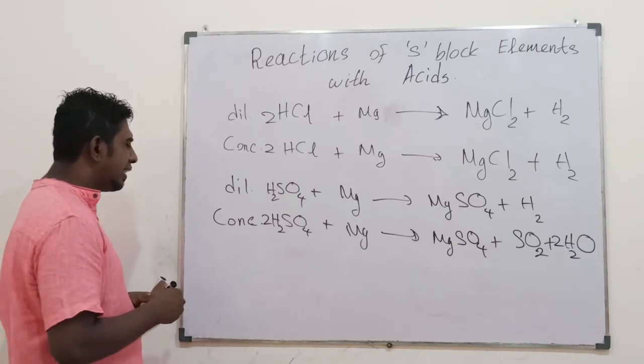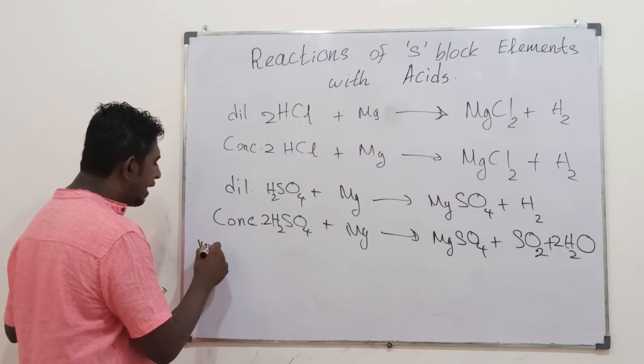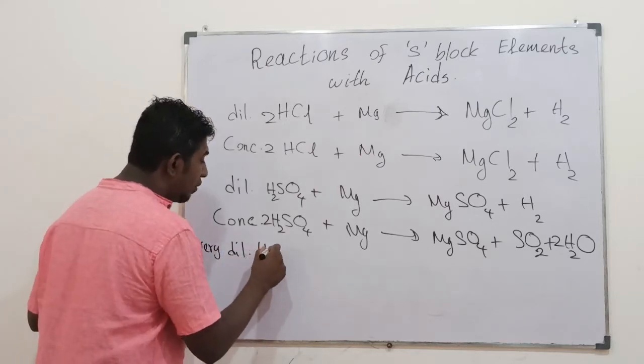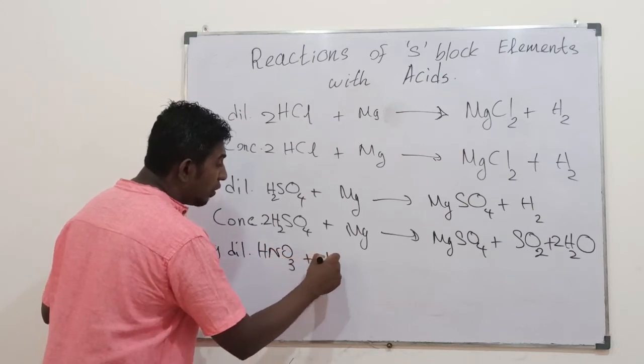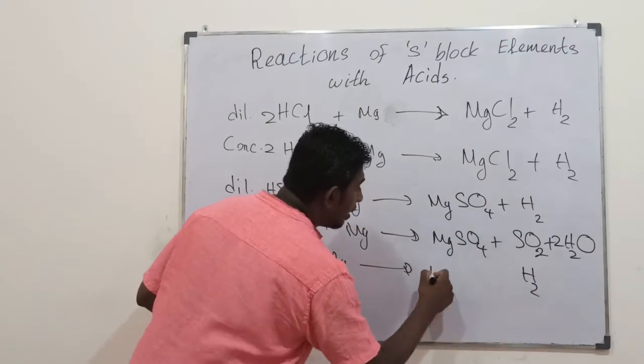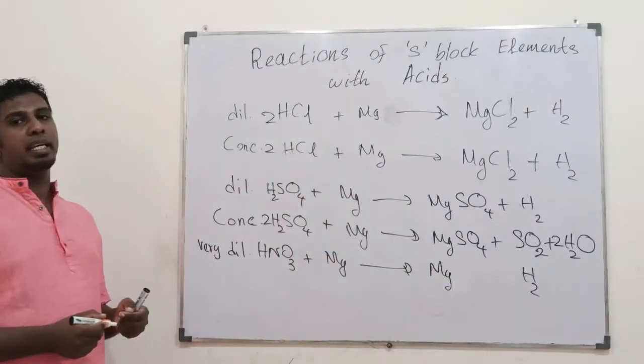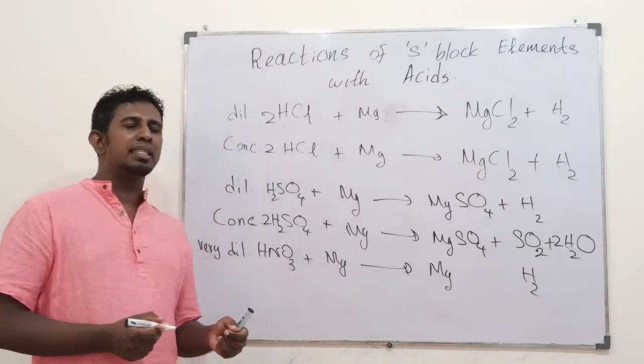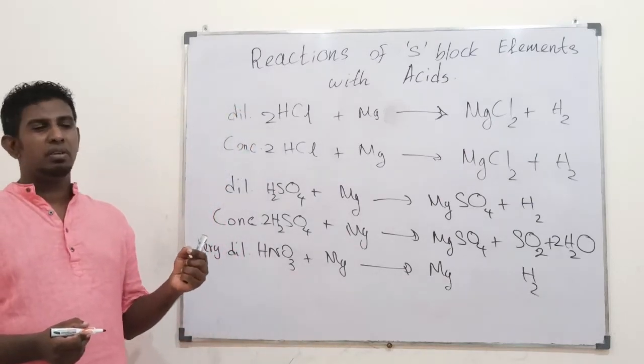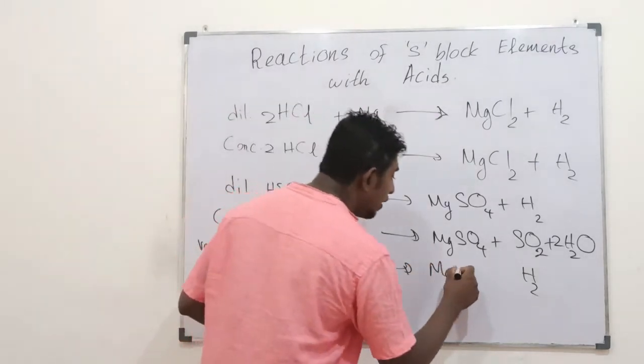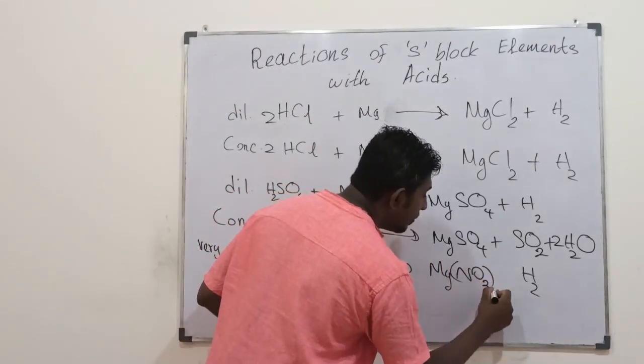Let's go to the nitric acid. If it is very very dilute nitric acid, it's only going to liberate H2. Otherwise, if it is normal dilute, you could get NO. Depending on the concentration, it could give you a few different gases at different times. It is magnesium nitrate you get.